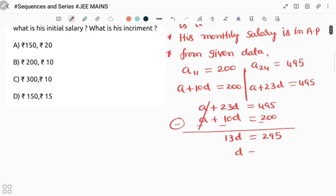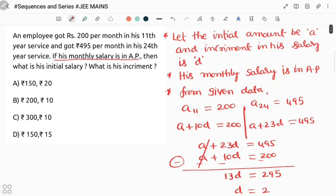So 13 table - it's not divisible. It means the initial amount is not 200, it will be 300, then the correct answer will come. If we take 300 instead of 200, so 195 will come, and d value will be 15.